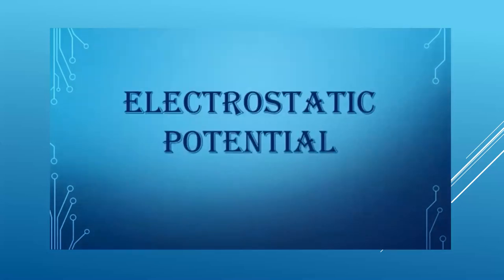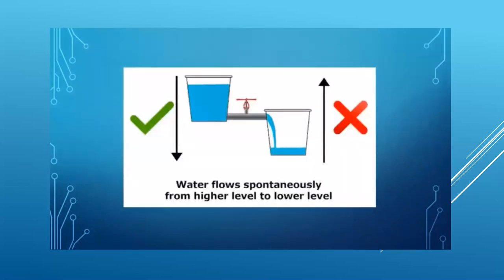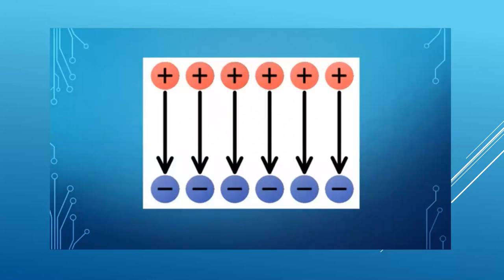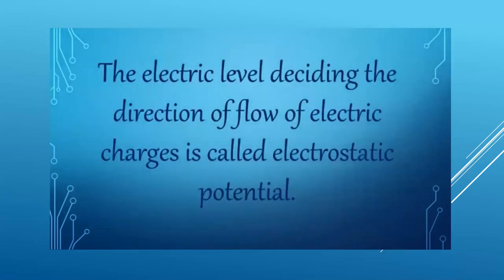The next topic is electrostatic potential. Water or liquid flows from a higher level to a lower level. Heat always flows from a body at higher temperature to a body at lower temperature. Similarly, there is a tendency of the positive charge to flow from a point of higher electric potential to a point of lower electric potential. This electric level deciding the direction of flow of electric charges is called electrostatic potential.